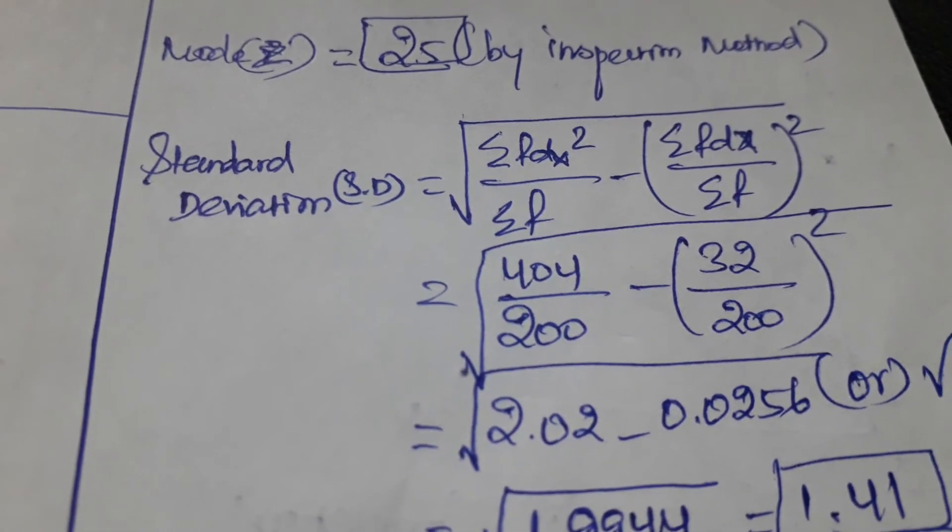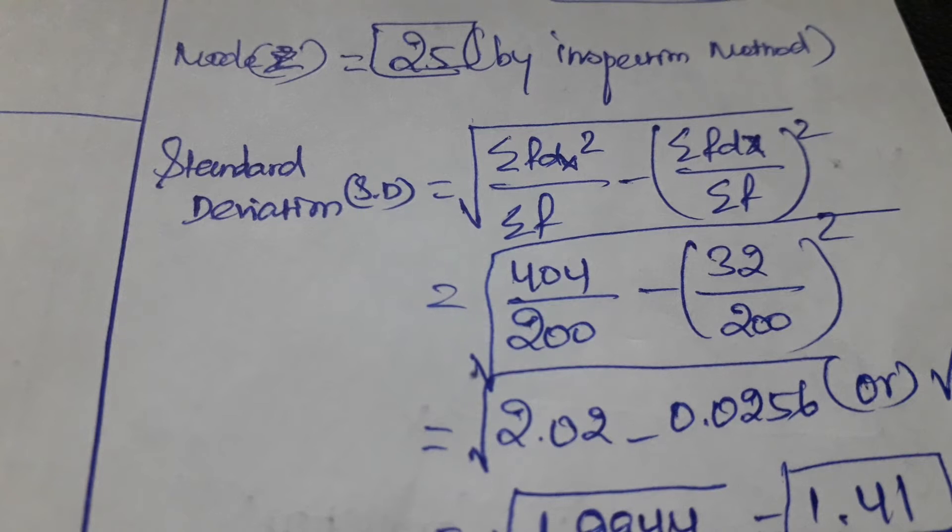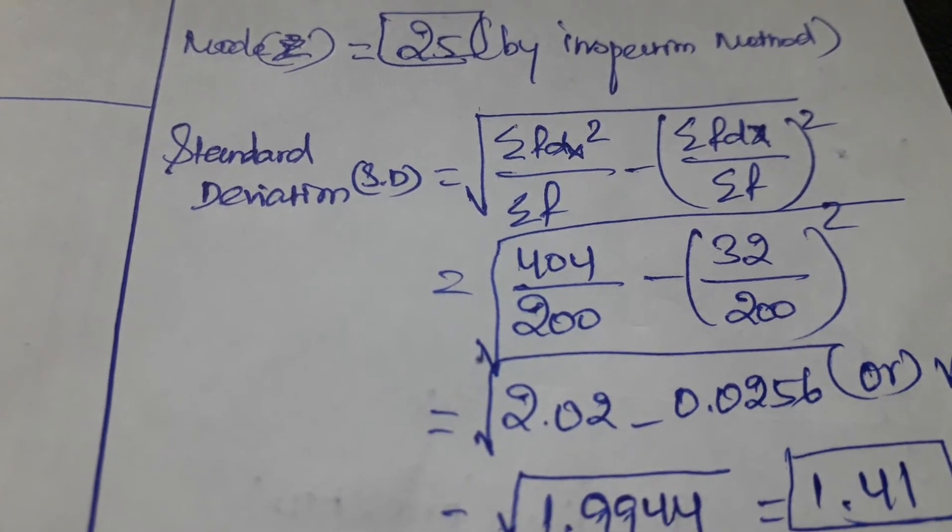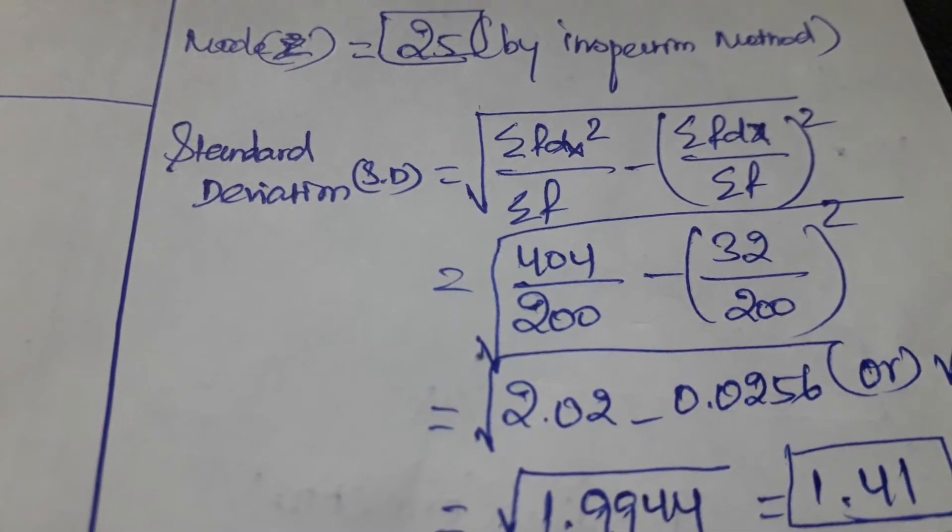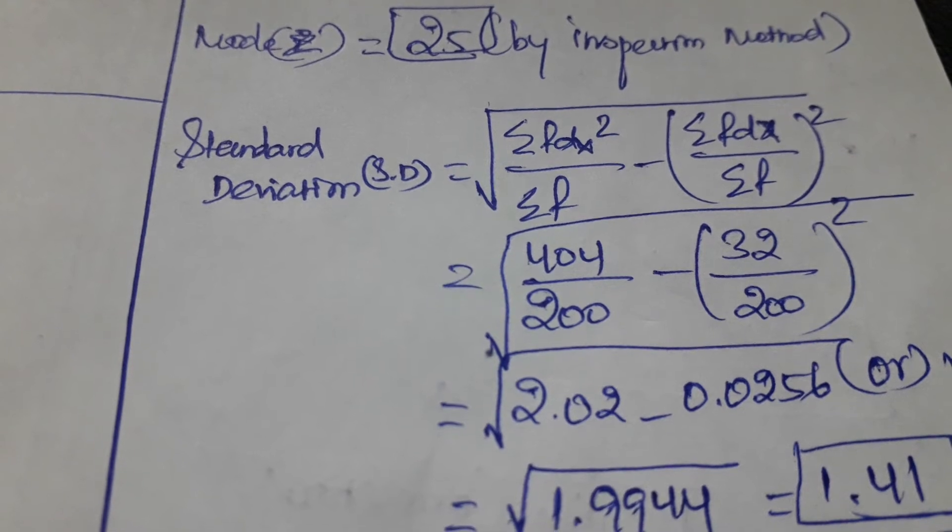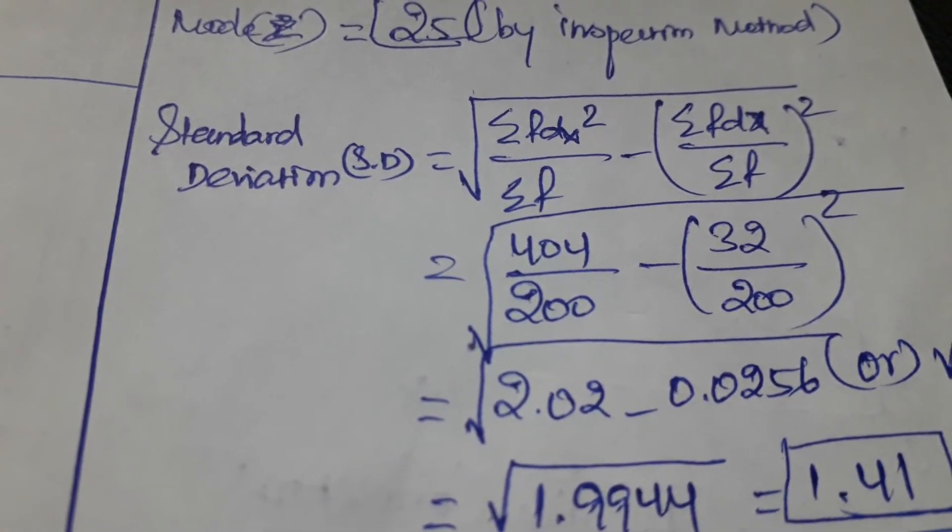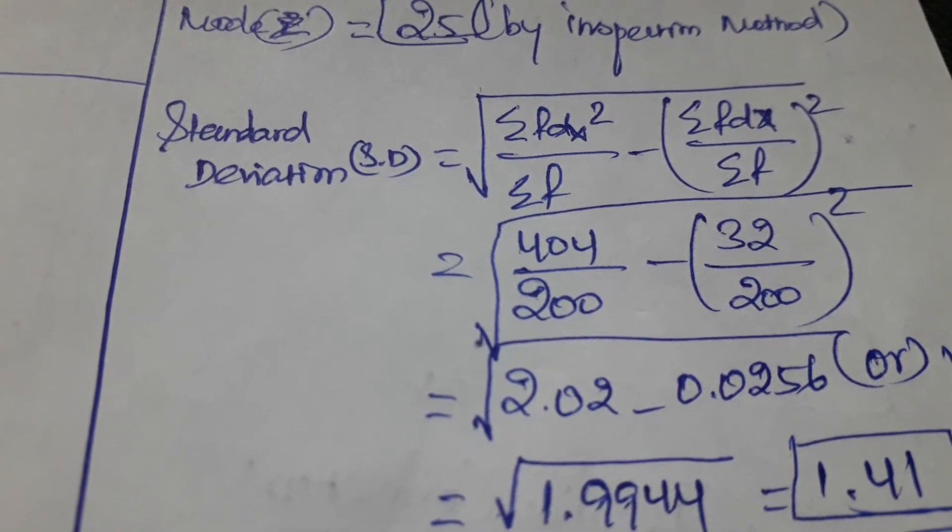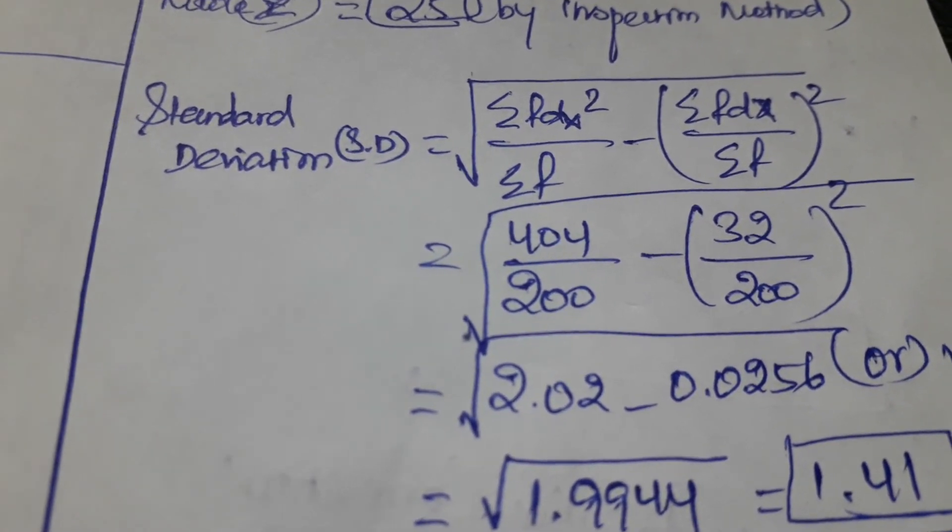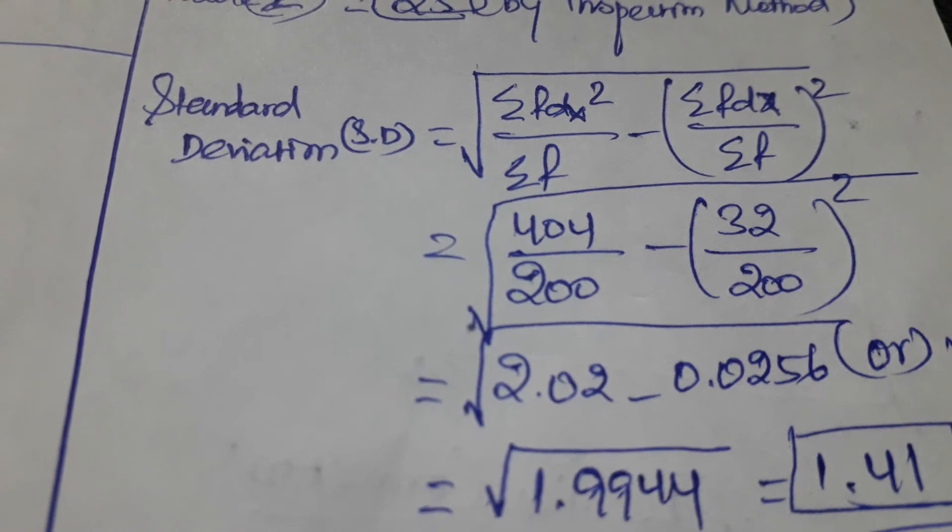Then standard deviation. Its formula is square root of the summation of f of dx squared divided by the summation of the frequency, minus summation of f of dx upon summation of the frequency whole squared.